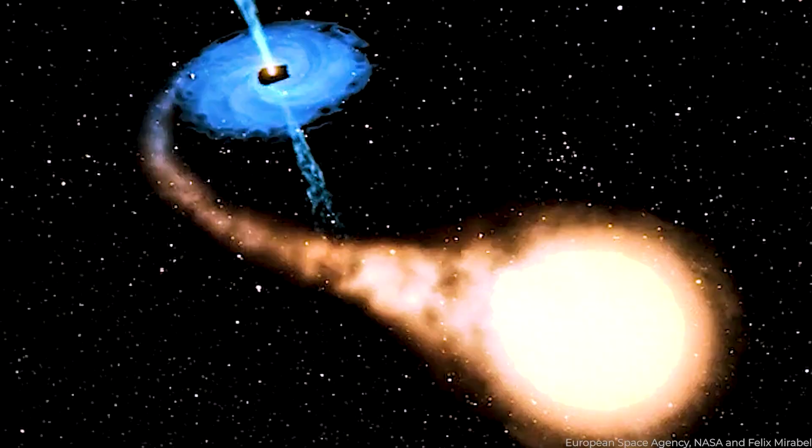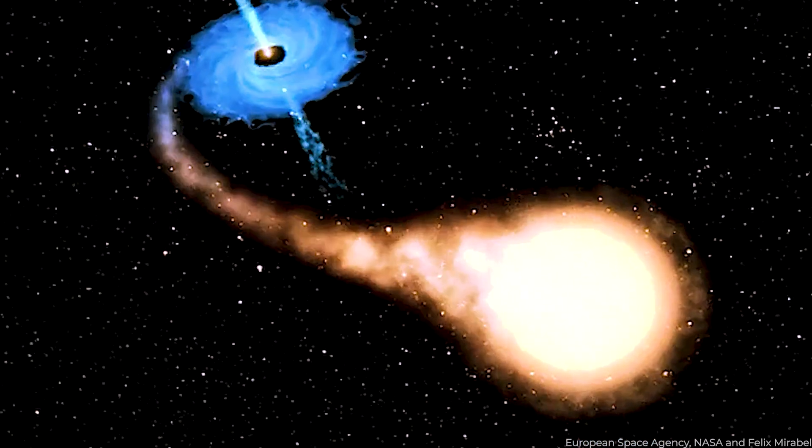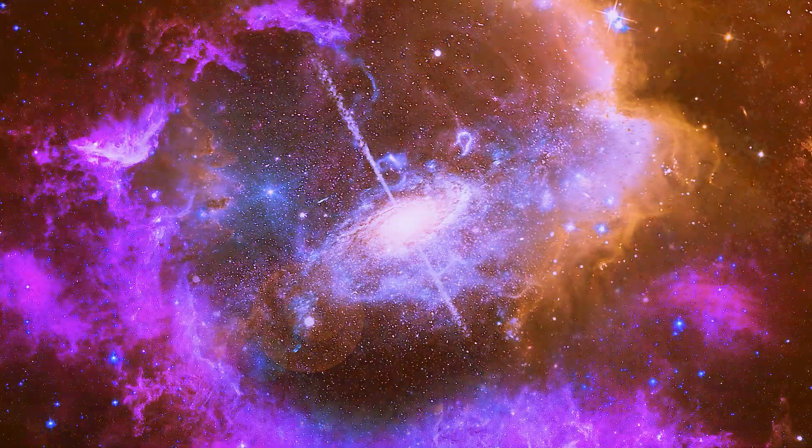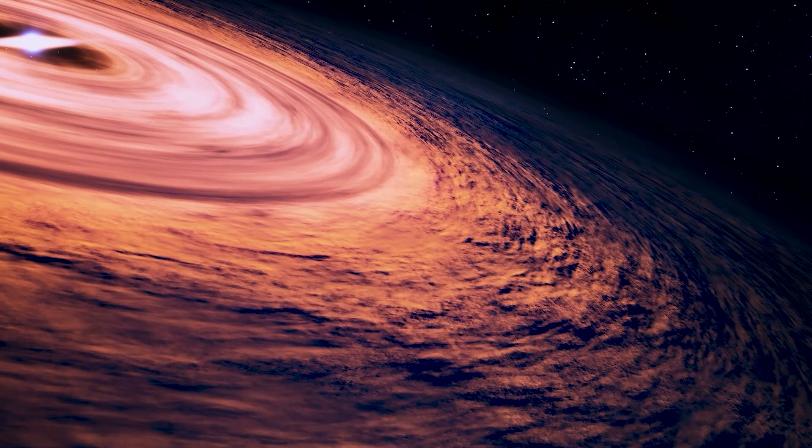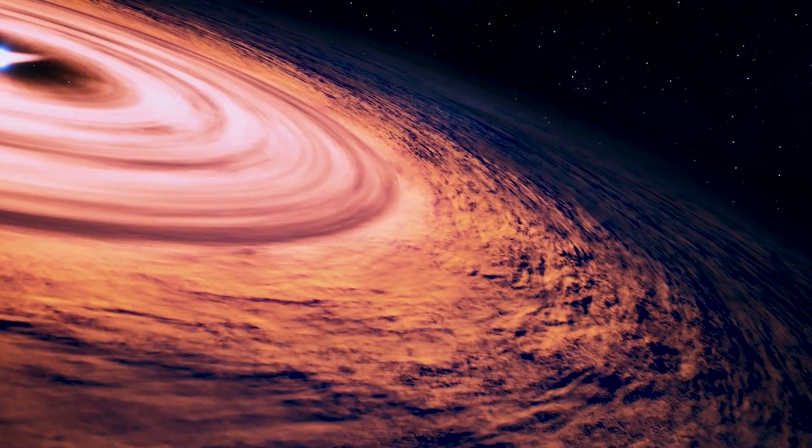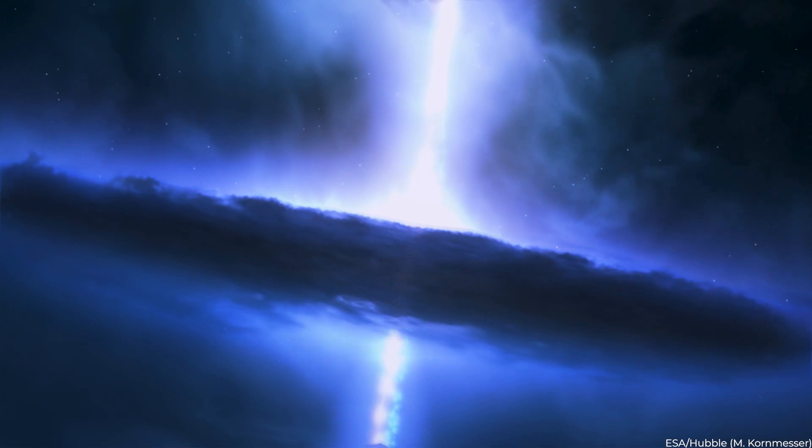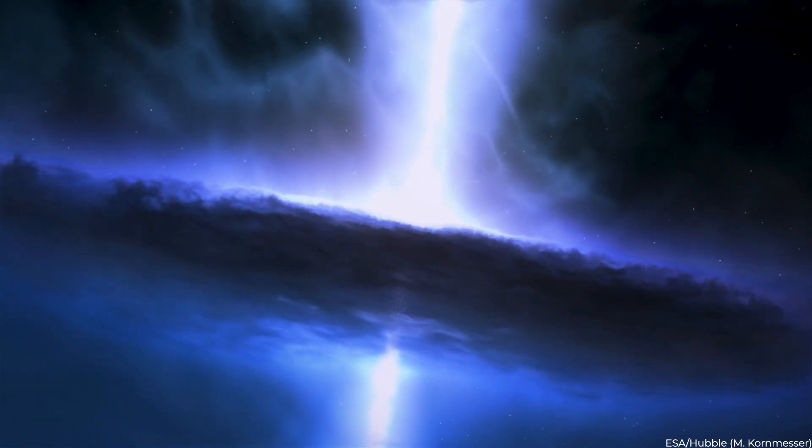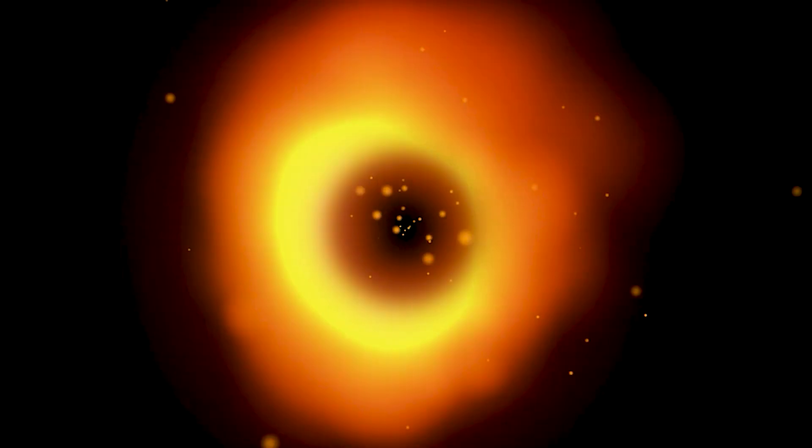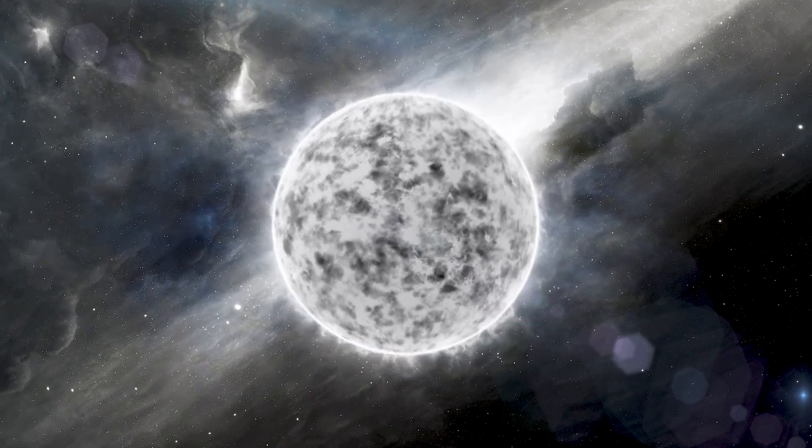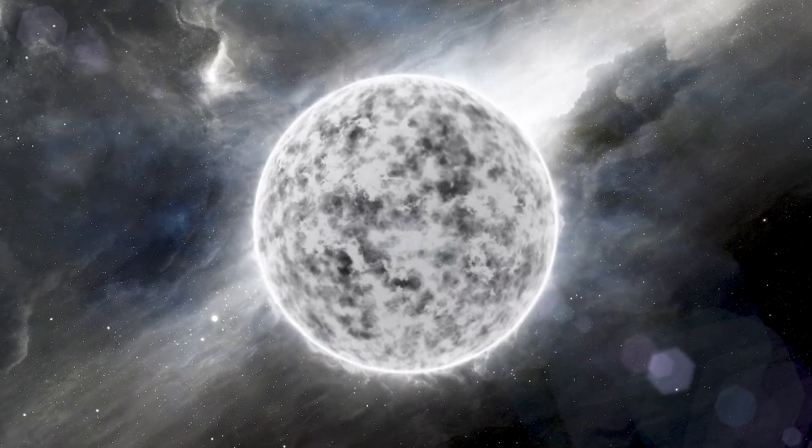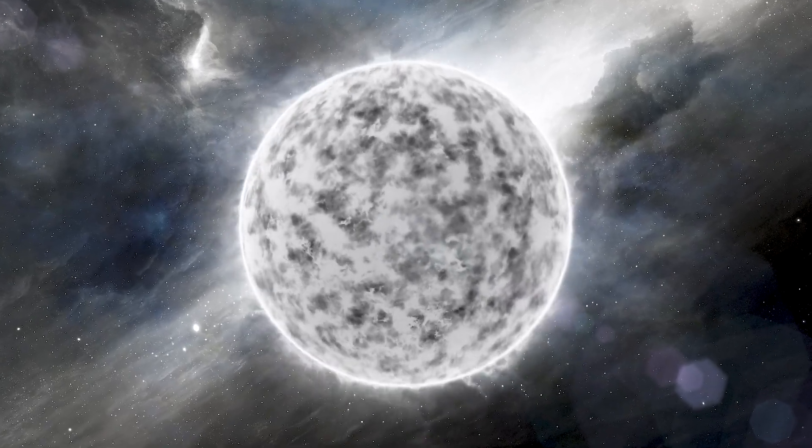A star becomes a black hole when it burns through its fuel too quickly and falls under its own weight. On the other hand, when the gas clouds at the center of very huge galaxies collapse under gravity and finally become so thick that no light can escape from their surface, a supermassive black hole is produced. And when neutron stars clash with other neutron stars, stars or planets, or when stars go nova, miniature black holes are created. Now, white holes are the complete opposite of that. They're objects that radiate light but block everything from entering.